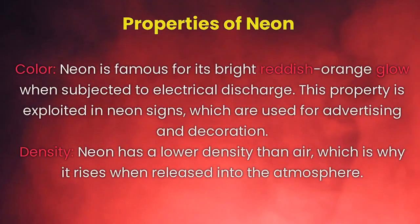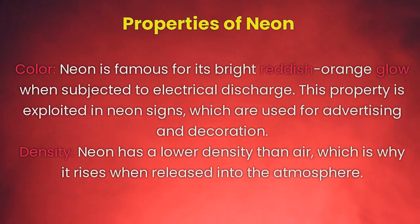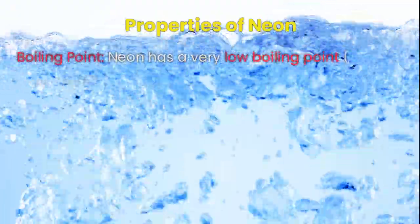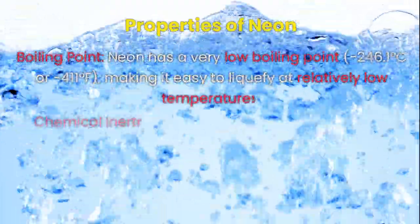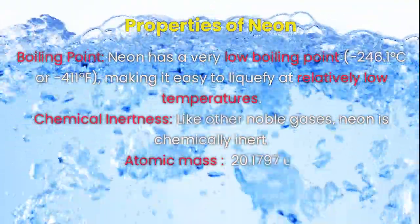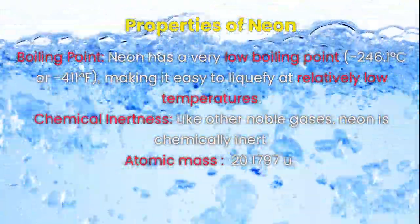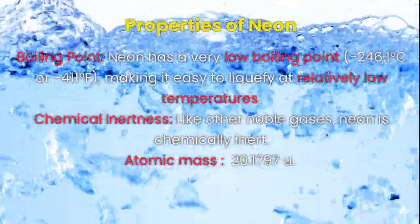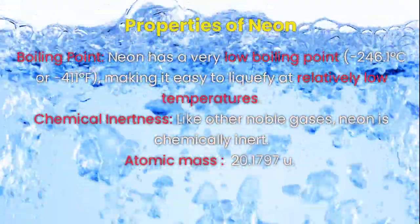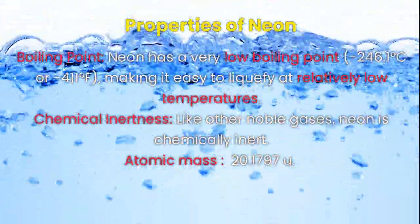Density: Neon has a lower density than air, which is why it rises when released into the atmosphere. Boiling point: Neon has a very low boiling point of -246.1 degrees Celsius or -411 degrees Fahrenheit, making it easy to liquefy at relatively low temperatures. Like other noble gases, neon is chemically inert.